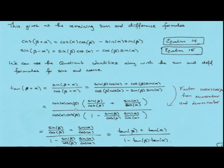Canceling the common factor of cosine of alpha times cosine of beta from numerator and denominator, sine of beta over cosine of beta becomes tangent of beta, and sine of alpha over cosine of alpha becomes tangent of alpha. We end up with our first formula for the tangent of the sum of two angles.